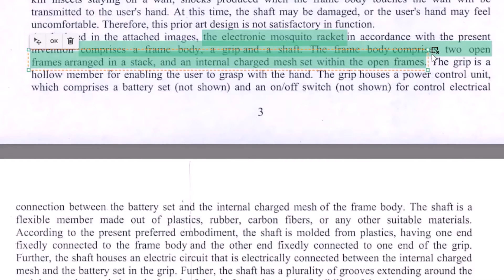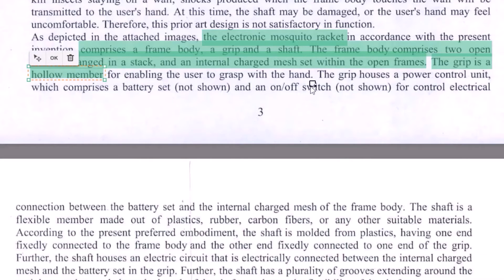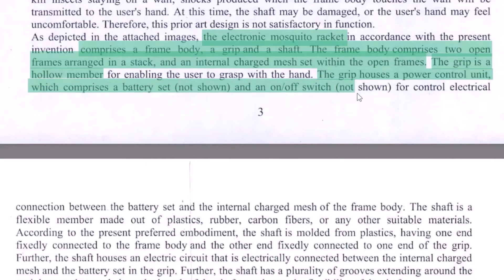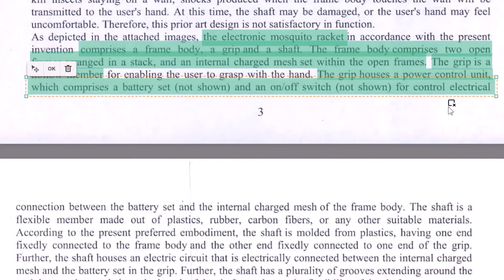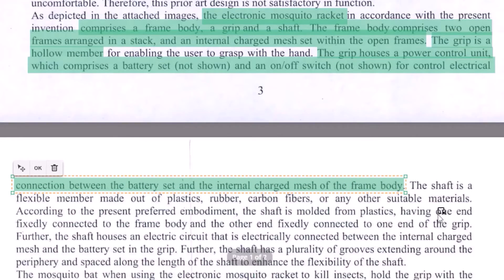Moving to the second element, we can talk about the grip — that the grip is a hollow member for enabling the user to grasp with the hand. This detail could be ignored; you can stop there. Then we can say: 'wherein the grip houses a power control unit that includes a battery set and an on/off switch for controlling electrical connection between the battery set and the internal charged mesh of the frame body.'